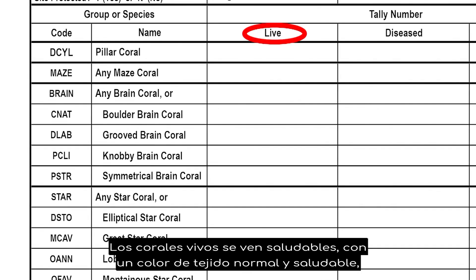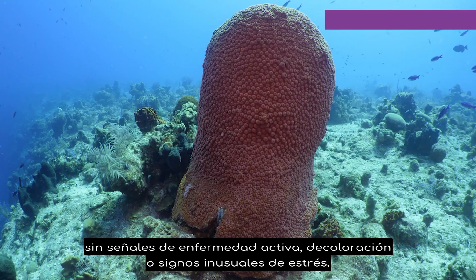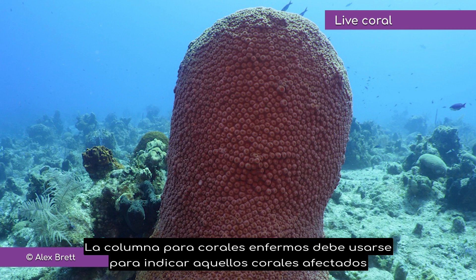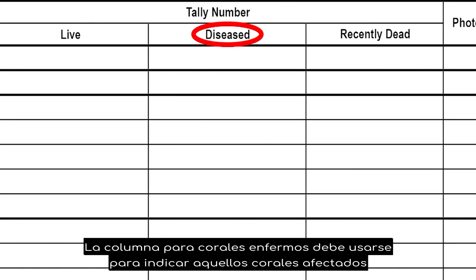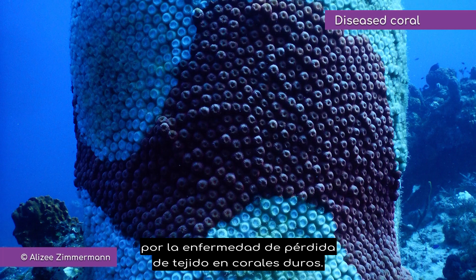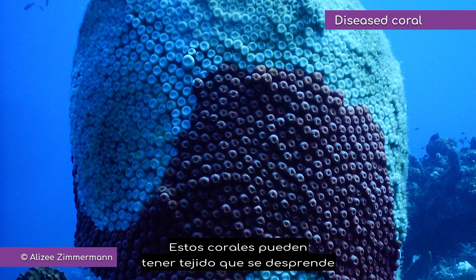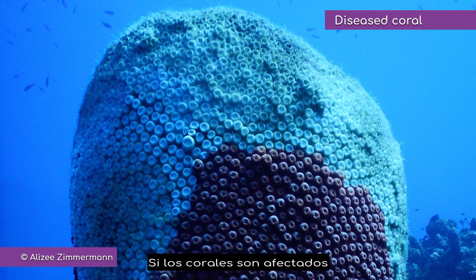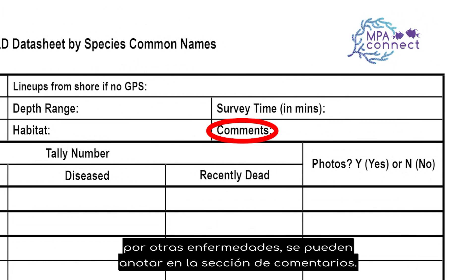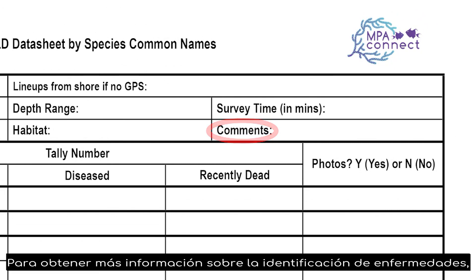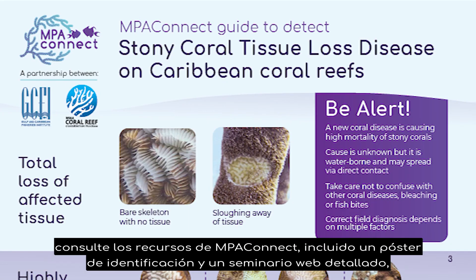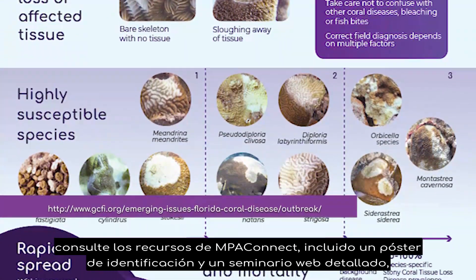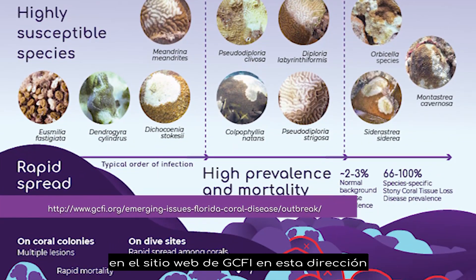Live corals look healthy with normal healthy tissue color and no signs of active disease, bleaching, or unusual signs of stress. The column for diseased corals should be used to indicate those corals affected by Stony Coral Tissue Loss Disease — these may have tissue sloughing off, exposing white, intact skeleton. If the corals are affected by other diseases, these can be noted in the comments section. For more information on disease identification, please refer to the MPA Connect resources, including an ID poster and an in-depth webinar on GCFI's website.